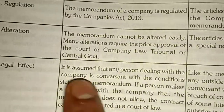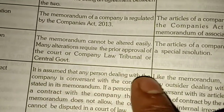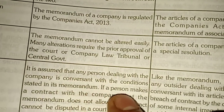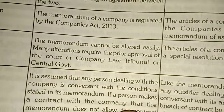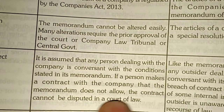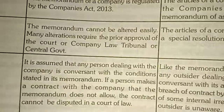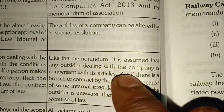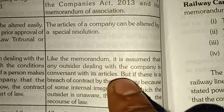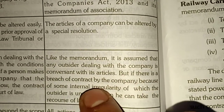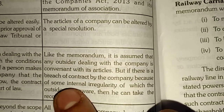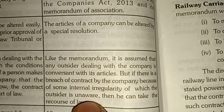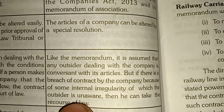Point seven: legal effect. It is assumed that any person dealing with the company is conversant with the conditions stated in its memorandum. If a person makes a contract with the company that the memorandum does not allow, the contract cannot be disputed in a court of law. Similarly, it is assumed that any outsider dealing with the company is conversant with its articles, but if there is a breach of contract due to some internal irregularity of which the outsider is unaware, then he can take recourse of law.